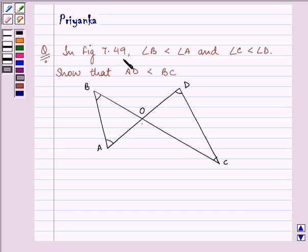In figure 7.49, angle B is less than angle A and angle C is less than angle D. Show that AD is less than BC.